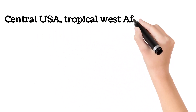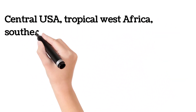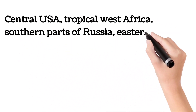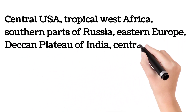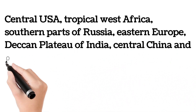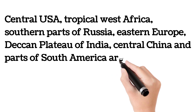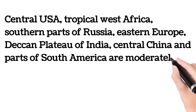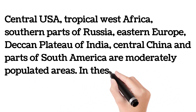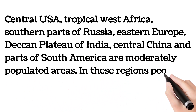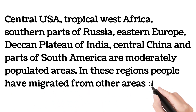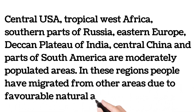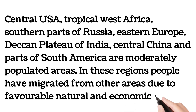Central USA, tropical West Africa, southern parts of Russia, Eastern Europe, Deccan Plateau of India, central China, and parts of South America are moderately populated areas. In these regions, people have migrated from other areas due to favorable natural and economic factors.